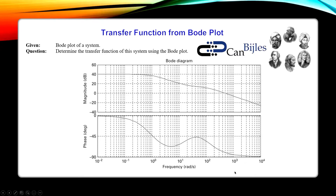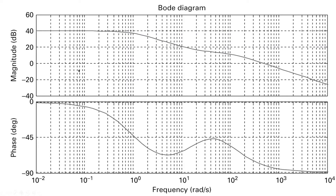Let me zoom in on this Bode diagram for the phase and for the gain. If I make a full-screen picture of this, there are several key points we can see. The gain starts at 40 dB for very low frequencies — at 10 to the power of minus 2, but effectively for zero radians per second this is also 40 dB. The gain is decreasing at some frequency, starts to decrease and keeps decreasing, then at some point it will catch up.